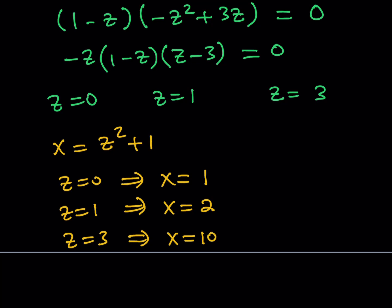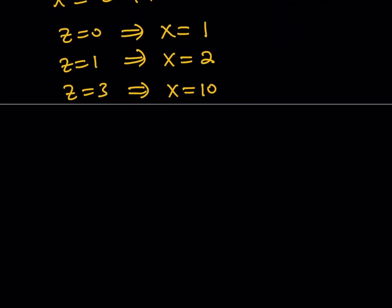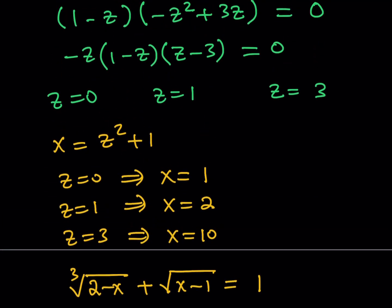Now, do you think all these values are going to satisfy our original problem? Let's go ahead and check that out next. So now we have the following solutions, and let's see what our original equation says. Obviously, it would work because we didn't really square both sides. We should not have any extraneous solutions. But let's just check for fun. For example, if x equals 1, you get 1 plus 0, which is 1. If x equals 2, you get 0 plus 1, which is 1. If x is equal to 10, you get negative 2 plus 3, which is again 1. Therefore, all these solutions are going to work in our equation.